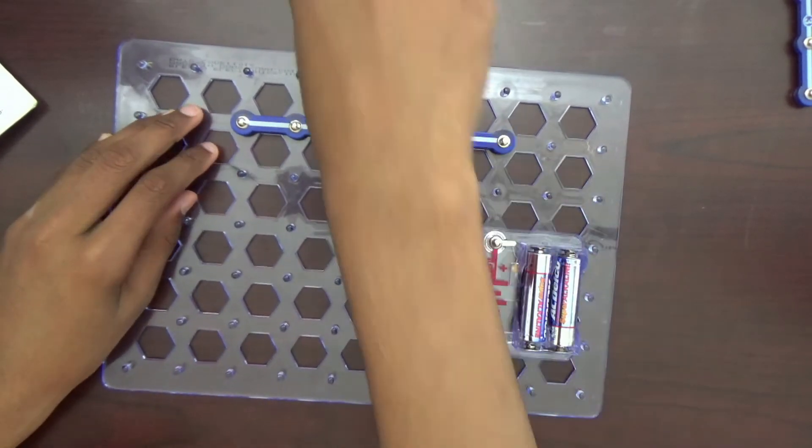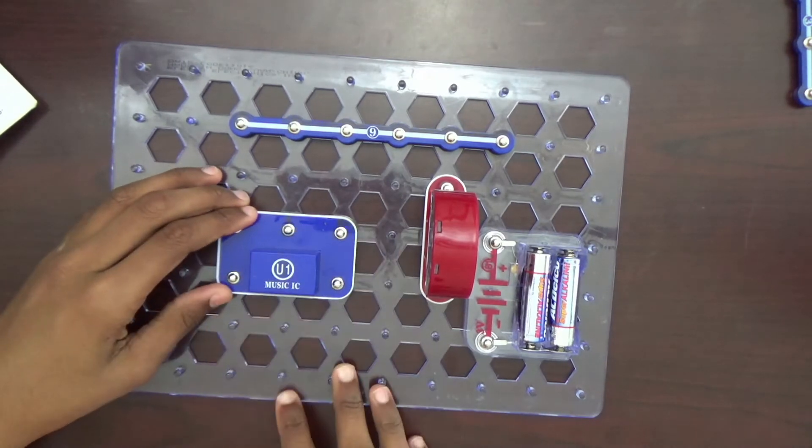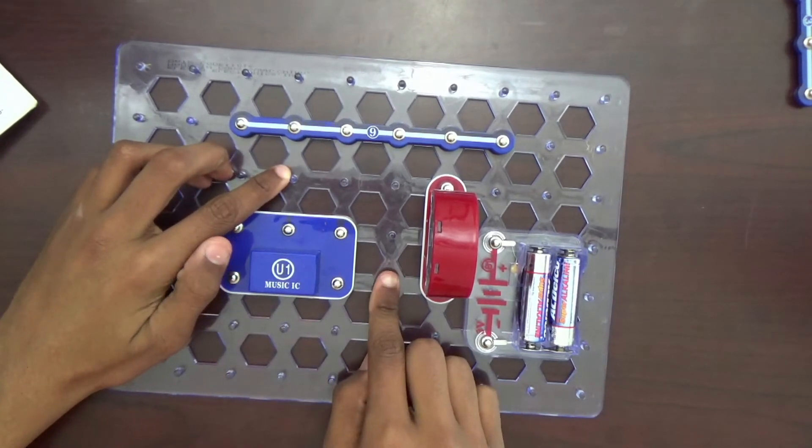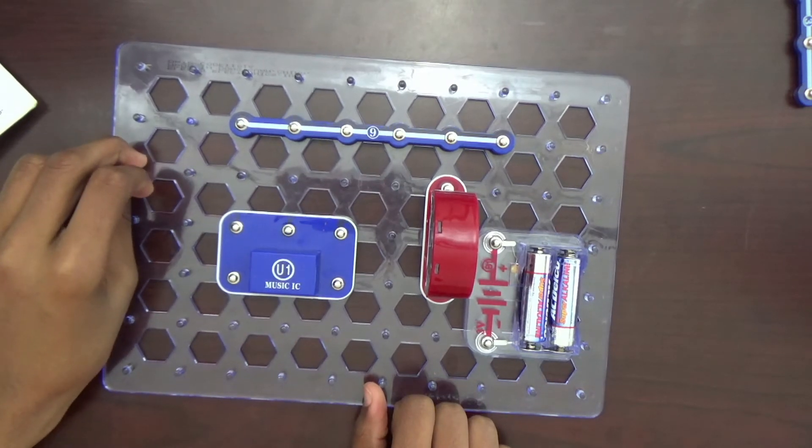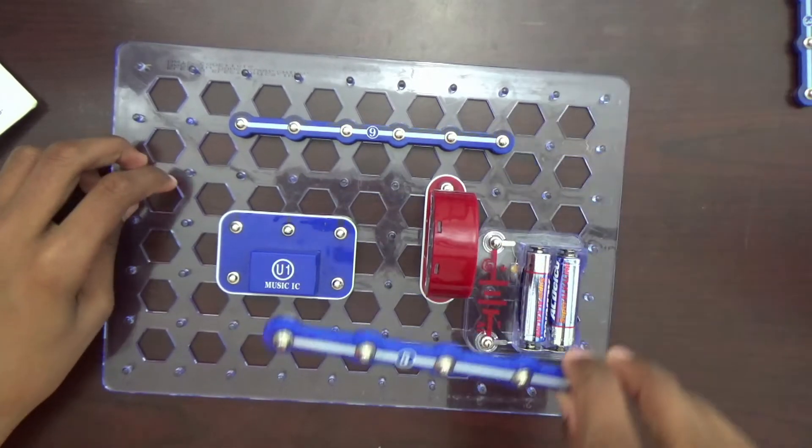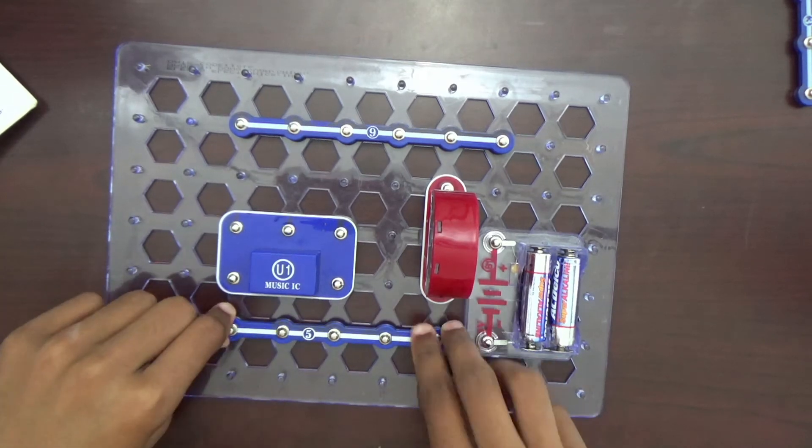We want the music IC here. One peg from here and one peg from here. And then we also want the 5 snap wire connected right here.